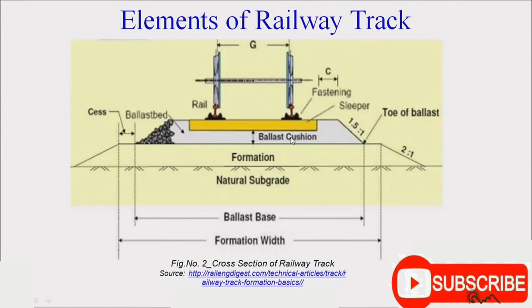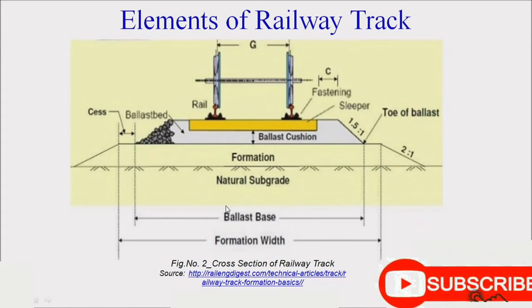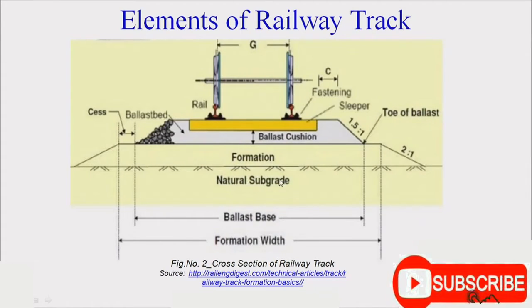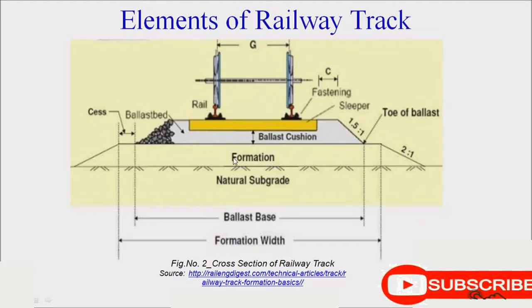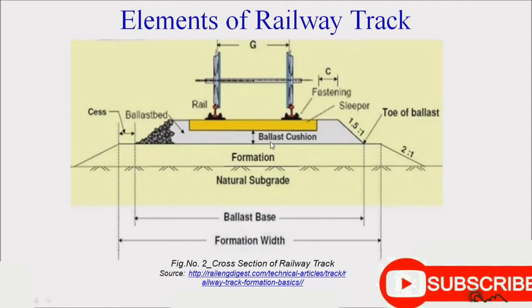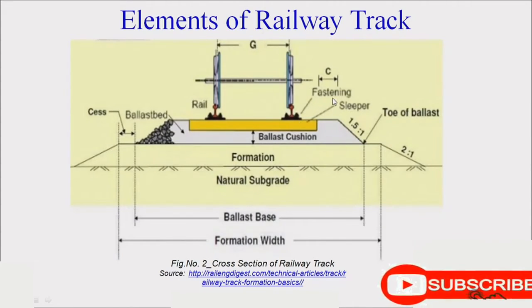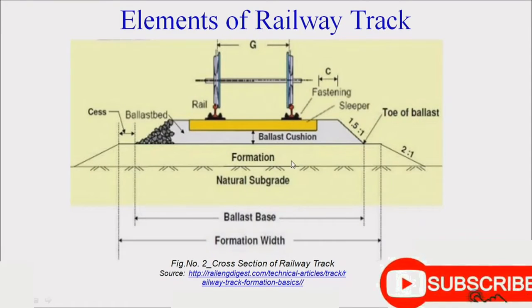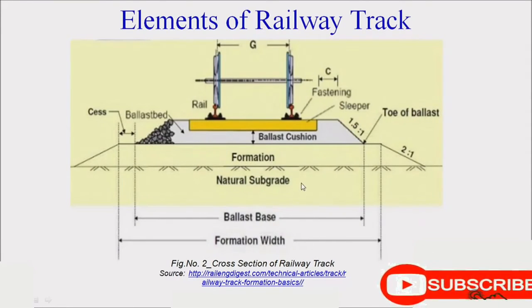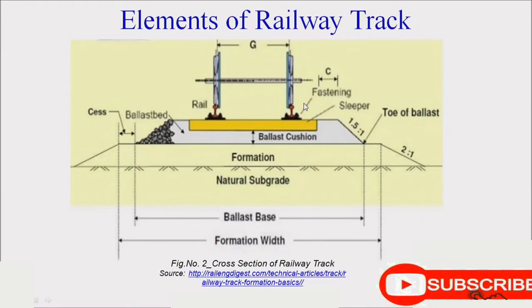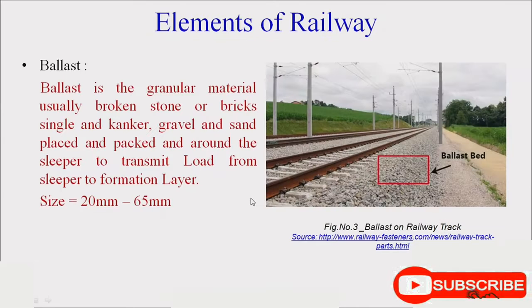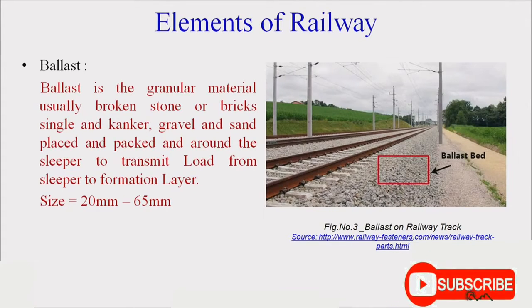These are the various elements of the railway track. The railway track consists of: first, natural subgrade; then formation level; then ballast; sleepers; fastenings; and rails. The formation level and subgrade serve as the foundation for the railway track to provide stability and safe transport of trains over the rails.